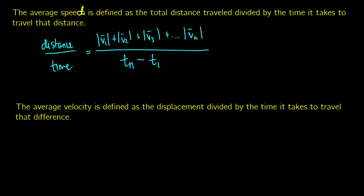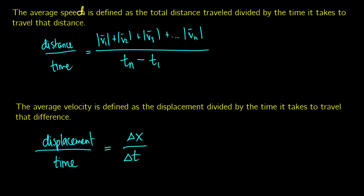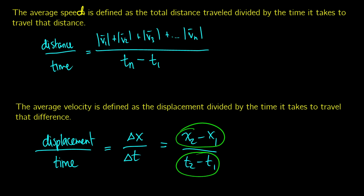Velocity is defined a little bit differently — it's displacement over time, so it has a direction. Velocity is what we call a vector; it has a magnitude and a direction. Displacement is the change in x, and the time it takes is a change in time, so velocity is x2 minus x1 over t2 minus t1.